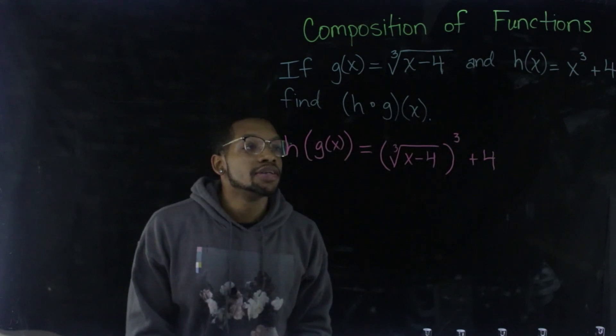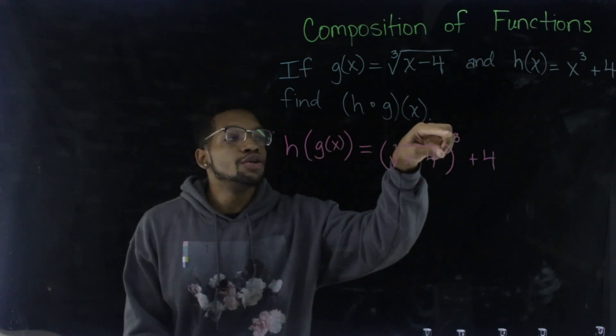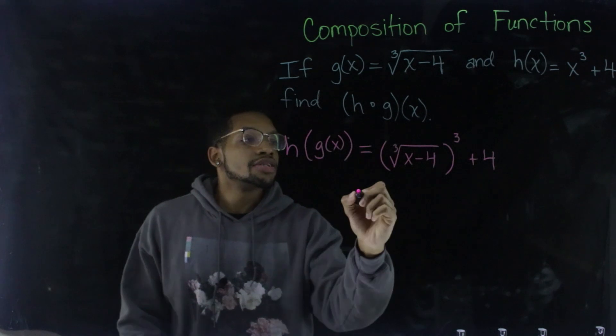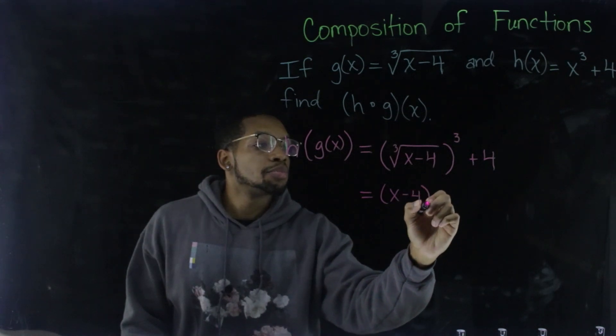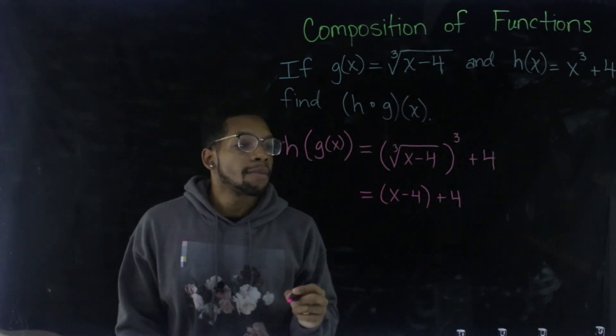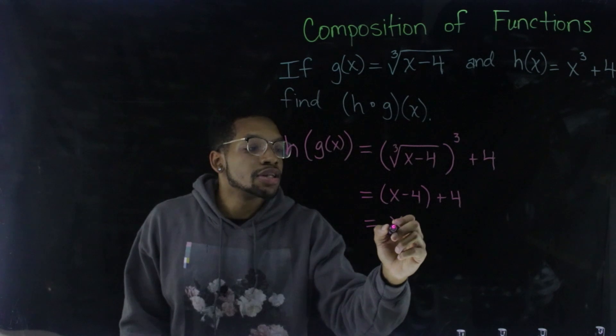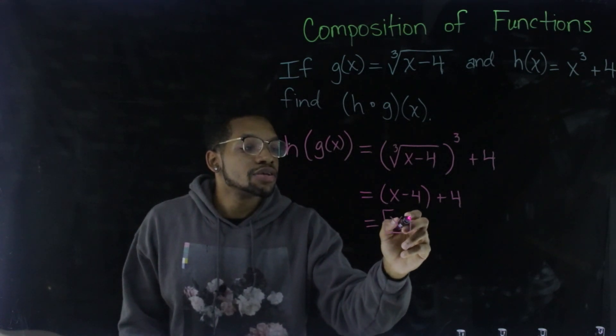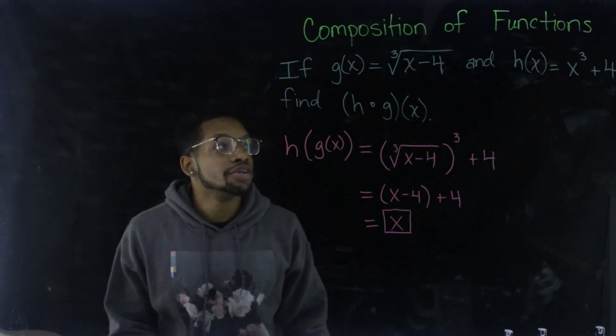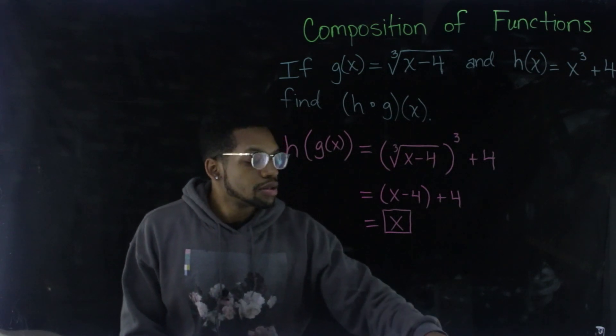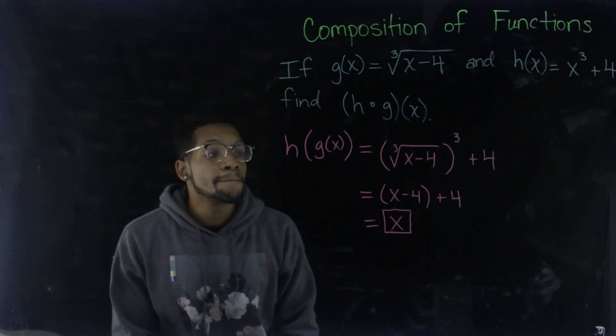All right. The thing that's nice about this problem is the cubed root of something cubed is just that something. So basically the cubed root and the cube cancel each other out. So that's really just X minus four plus four. And then we can take out the parentheses. So then we just have negative four plus four, which is zero. So we're literally just left with X as our final answer. So that problem, it looked like we're doing the most, but it ended up being nothing. So it looked like it started out doing the most, but luckily some things canceled out and it ended up being kind of easy. So that's it.